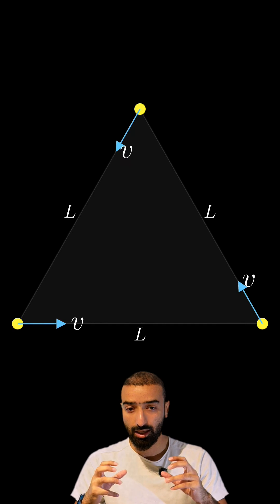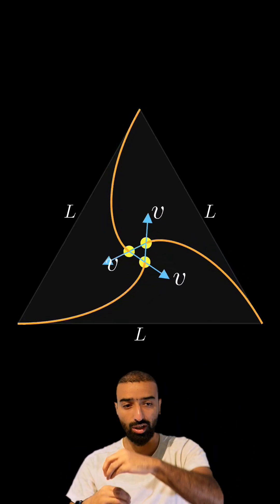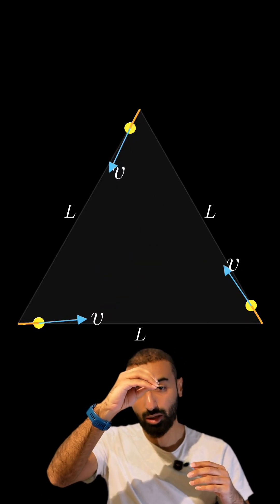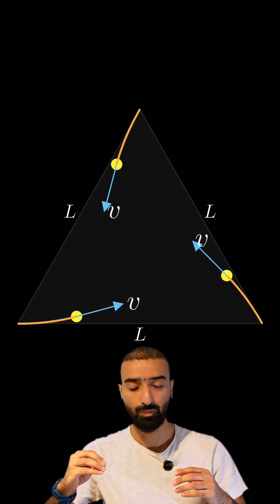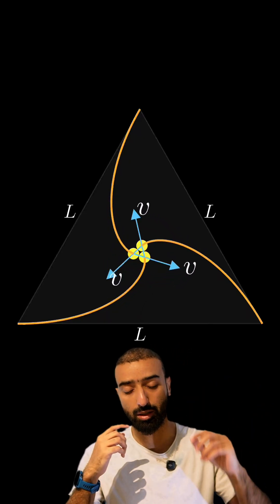At every moment, each particle velocity is directed towards the next particle in cyclic order. That is, particle 1 moves towards particle 2, particle 2 moves towards particle 3, particle 3 moves towards particle 1.